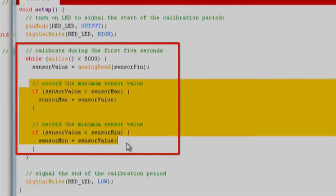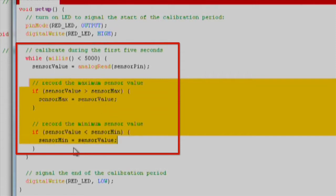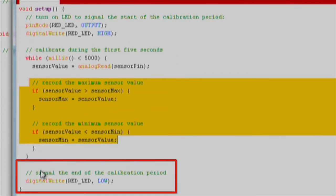As we continue to calibrate, our window of acceptable ranges becomes smaller and more accurately defined. Once 5,000 milliseconds have elapsed, we break out of the calibration mode and turn our red LED off.